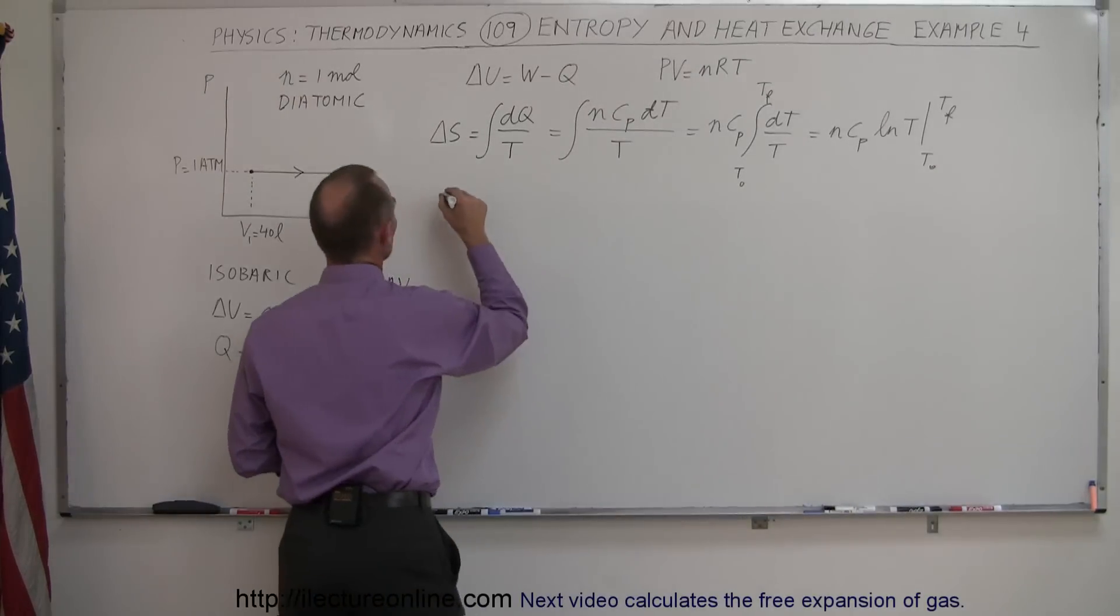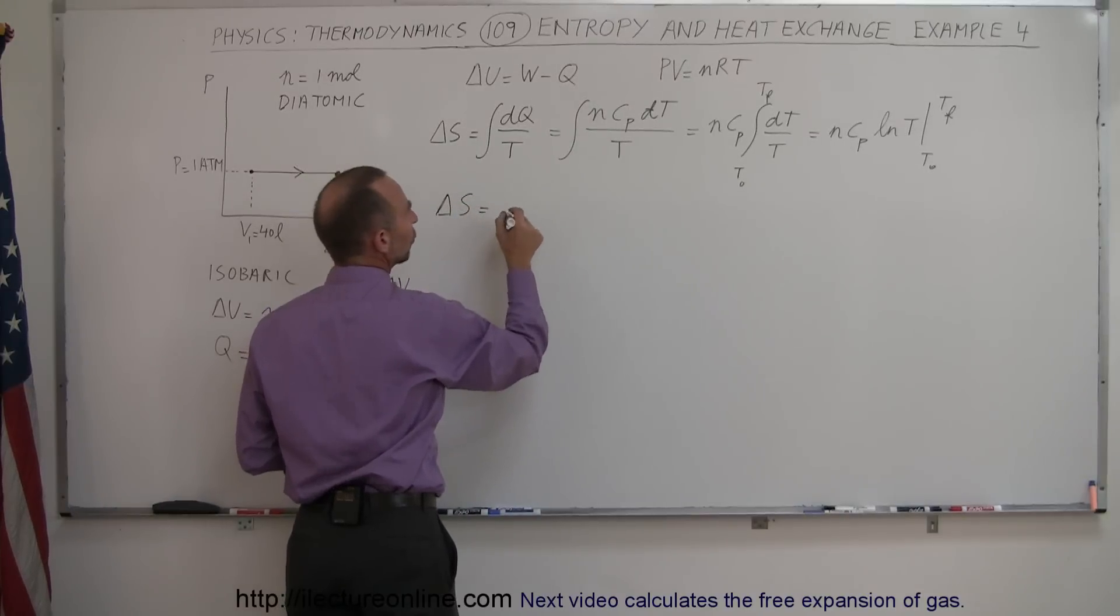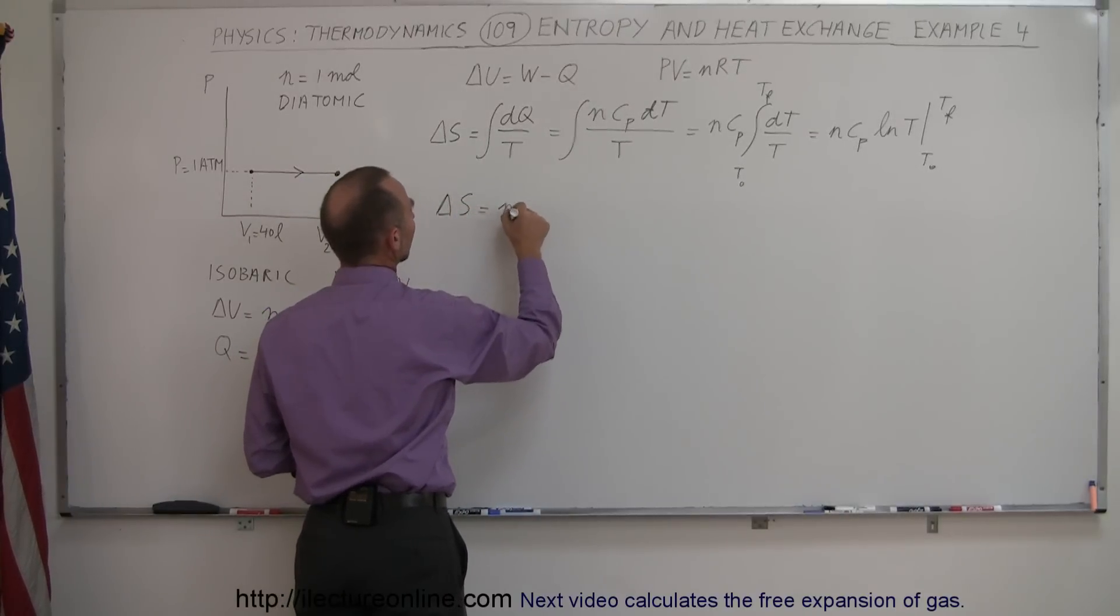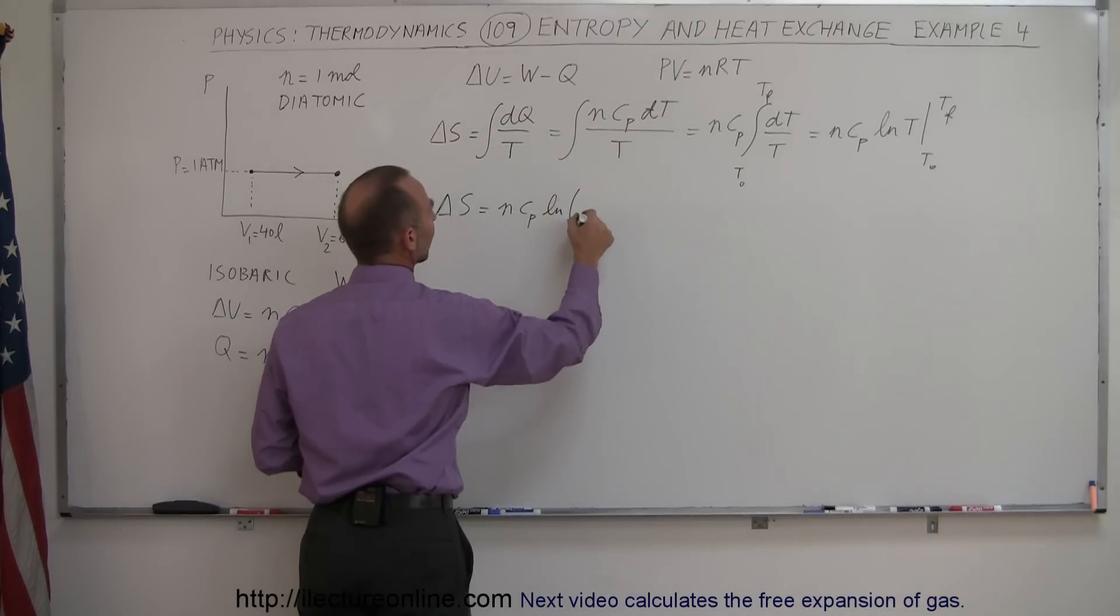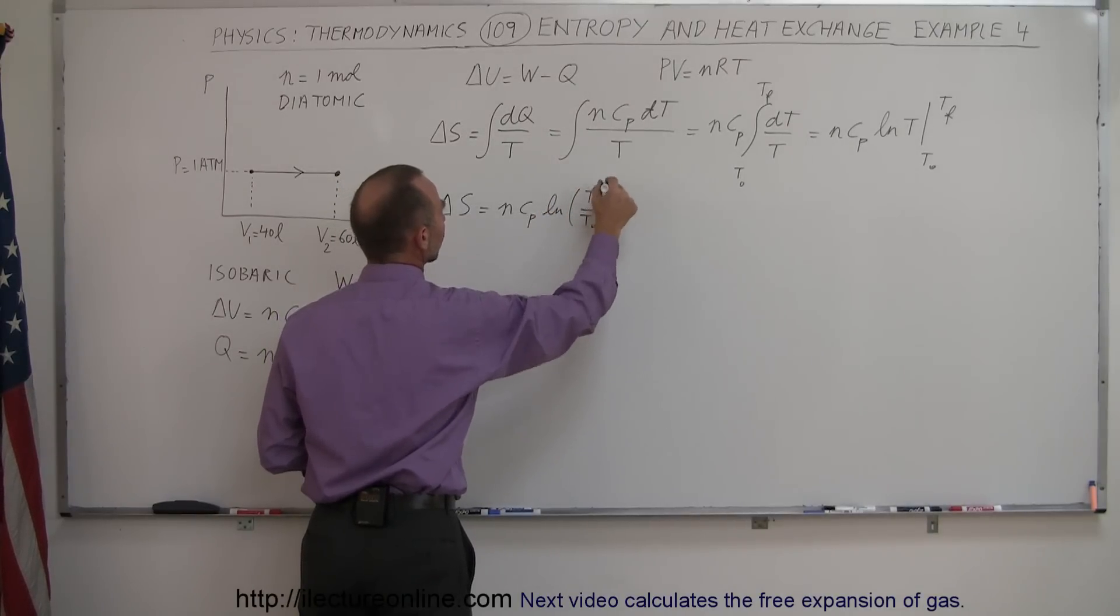And so finally, we can say that the change in entropy, in this case, is going to be equal to N C_P times the natural log of T final over T initial.